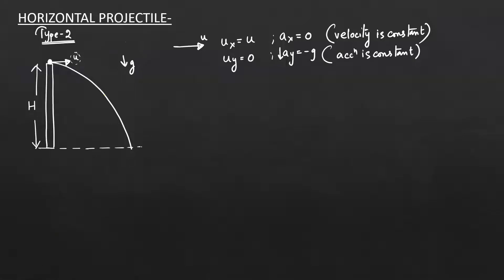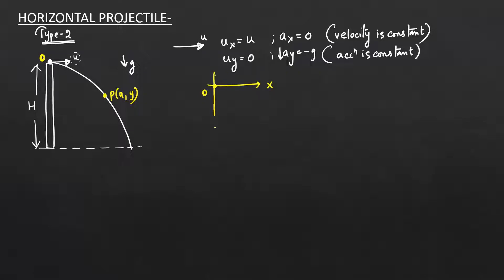To prove the path is parabolic, I take a general point P(x, y), just as I did for the oblique projectile. The point of projection is taken as the origin. This is my x-axis and this is my y-axis, and I have taken one point P of coordinates (x, y).